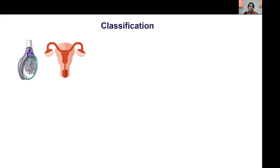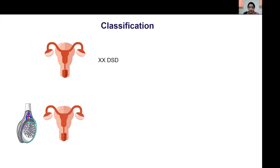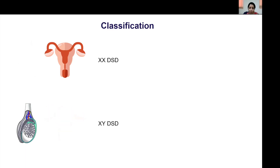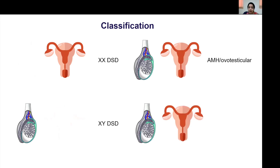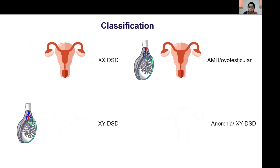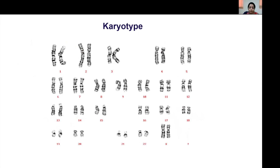Using the presence and absence of gonads and Mullerian structures, we can broadly classify patients into XX or XY DSD. Presence of Mullerian structures in the absence of gonads denotes XX DSD; presence of gonads in the absence of Mullerian structures denotes XY DSD; presence of both is indicative of anti-Mullerian hormone issues or ovotestis; and absence of both is found in conditions such as anorchia.